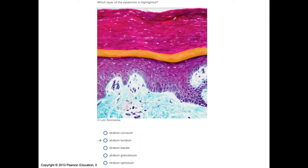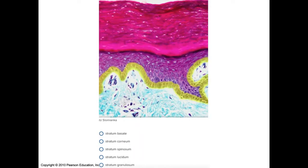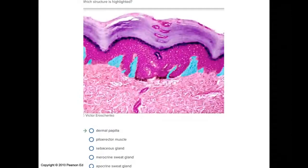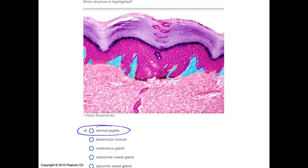The stratum corneum corresponds to 'Share' in the mnemonic. Then we have the stratum lucidum, then the stratum granulosum. At the very bottom, the highlighted region is the stratum germinativum or basale. Below the epidermis, those hills in the dermis are called dermal papillae.